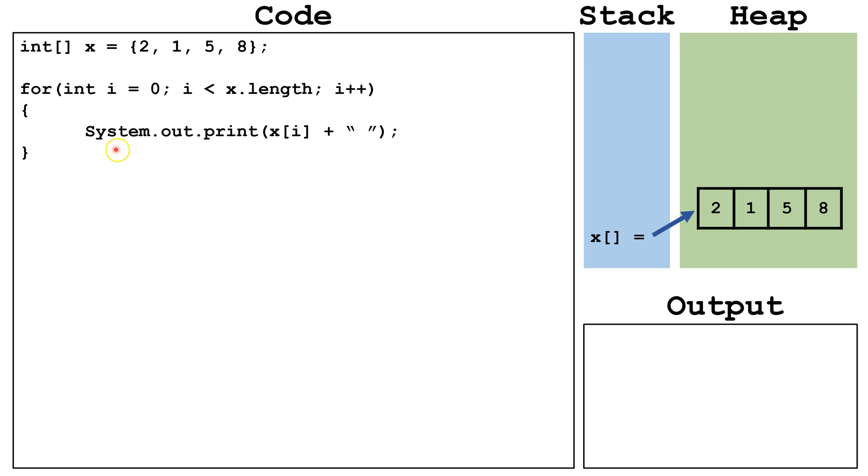Inside the loop, we are going to print out x index i and then a space so all the numbers don't run together. So let's trace this out. We will start by declaring i and setting it equal to 0 and that gets placed on the stack. Now, we are going to check is i less than x dot length.